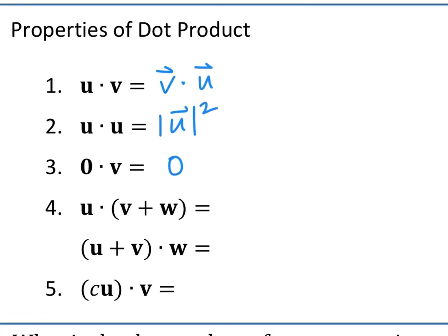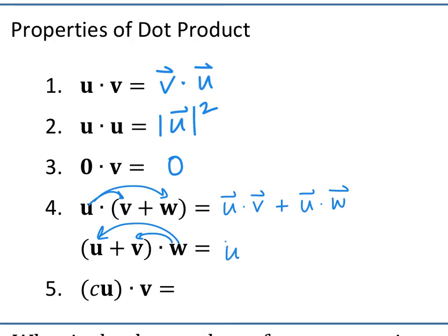The next thing: if you have a vector dotting the sum or the resultant of two vectors, you can think of it as a distributed property. So it's the same as u dot v plus u dot w. And since dot product is commutative, you can switch the directions — you can also distribute backwards as u dot w plus v dot w. The last property: if you have a scalar multiplied to a vector dotting another vector, that scalar can change location as well.